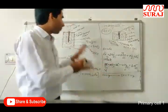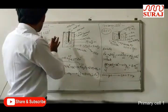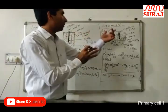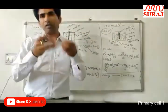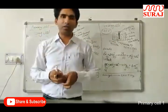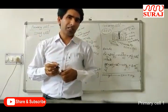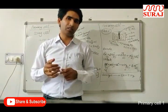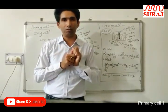So those are the two types of primary cells: the dry cell and the mercury cell. In the next video we will discuss the secondary cell and the fuel cell. That is all for today. Thank you.